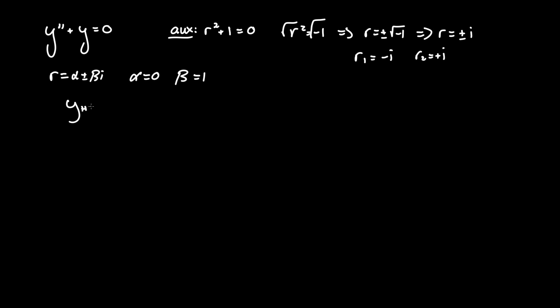So in this situation y homogeneous equals e to the alpha t times c1 cosine of beta t plus c2 sine of beta t.